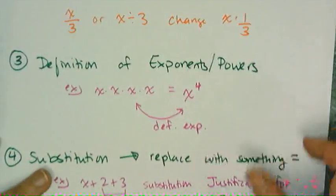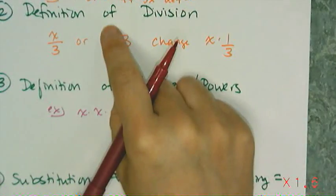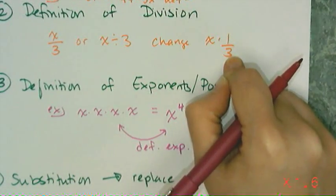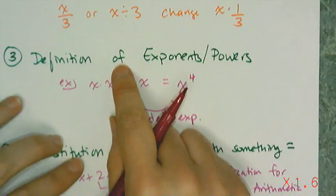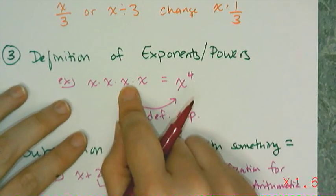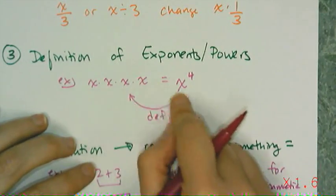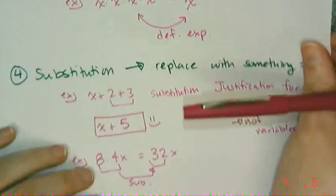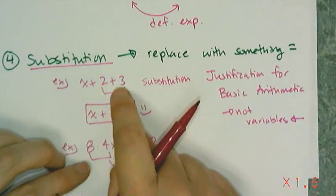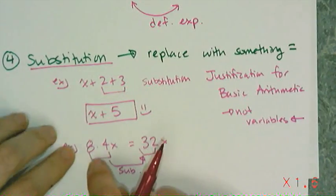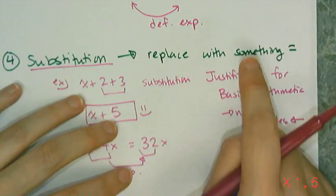To summarize: the definition of subtraction simplifies or unsimplifies signs as needed. The definition of division changes division into multiplication by the reciprocal. The definition of exponents either expands an exponent into its defined multiplication or combines multiplication into an exponent. And substitution is our justification for basic arithmetic with numbers — like adding 2 and 3 to get 5, or multiplying 8 and 4 to get 32. Those are our basic definitions.